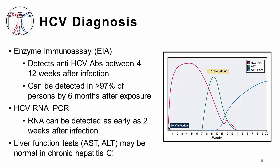The test of choice to diagnose hepatitis C infection is through hepatitis C serologies, which can be processed through the enzyme immunoassay, or EIA test. It's important to realize that hepatitis C antibodies usually do not form right away — it takes the body between 8 and 12 weeks after the initial infection to produce detectable antibodies, and by 6 months, over 97% of people can be tested via antibody test. However, if a patient presents with symptoms of acute hepatitis, the test to send is the hepatitis C RNA PCR, because hepatitis C RNA can be detected as soon as two weeks after infection.